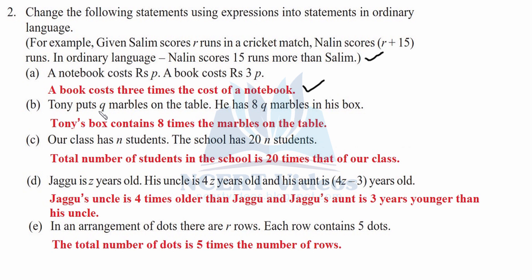Part b: Tony puts q marbles on the table and has 8q marbles in his box. In ordinary language: Tony's box contains 8 times the marbles on the table. Part c: a class has n students and the school has 20n students. In ordinary language: the total number of students in the school is 20 times that of a class.